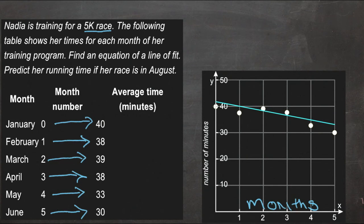And in the first month, month 0 really, January, it took her 40 minutes, so that's what this dot is. And then in February, month 1, it took her 38 minutes, so that's what that dot is, and so forth.